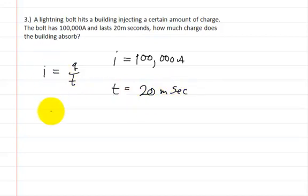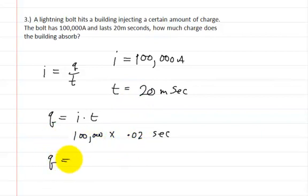Again, we're going to manipulate this and say that the charge is equal to the current times the time. So you're going to put down 100,000 times .02 seconds. So that's milli, so you just move over the decimal place two places. So 1, 2, and 3. So you have a zero here. Okay, so the charge is going to be equal to 2,000 coulombs. And that's how you solve that one.